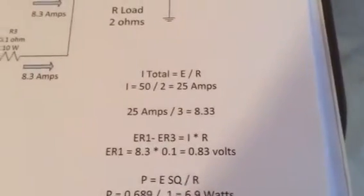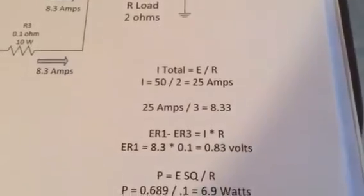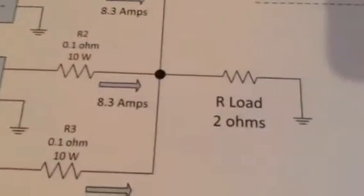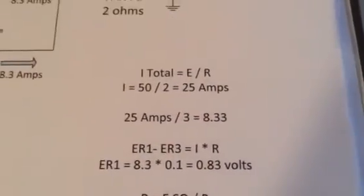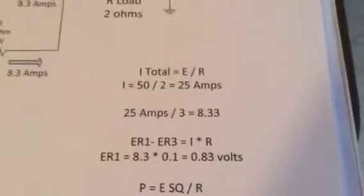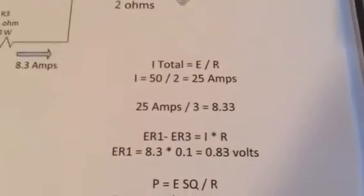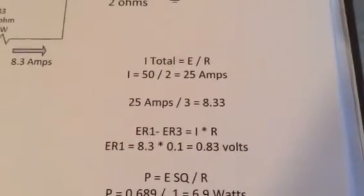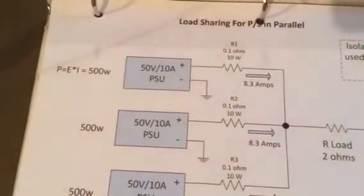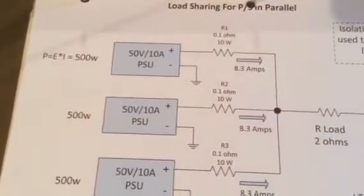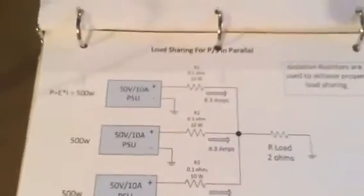The total current would be I equals E over R. So 50 over, you notice here I got a 2 ohm load. So 50 divided by 2 is 25 amps. And then with a parallel circuit, ideal parallel circuit, the current is divided evenly across each branch. We have three branches, so that's why you have 8.3 amps. This is the same with a parallel resistive circuit, no different.